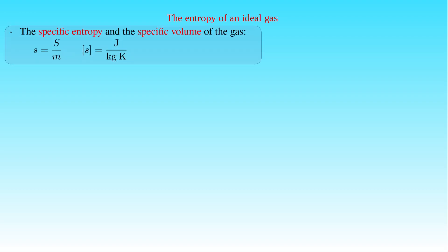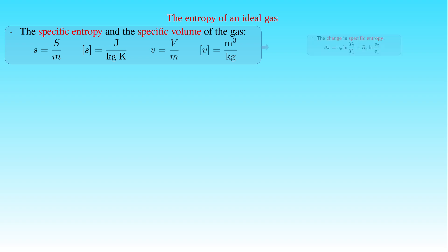We can cast this equation in another form by introducing the specific entropy and specific volume of the ideal gas. The specific entropy is defined by the ratio of entropy S to mass M, with SI unit joule per kilogram Kelvin. The specific volume is given by V over M, with SI unit cubic meter per kilogram. Applying these definitions, the change in specific entropy is C_V times the natural logarithm of T2 over T1, plus R_S times the natural logarithm of specific volume V2 over V1.